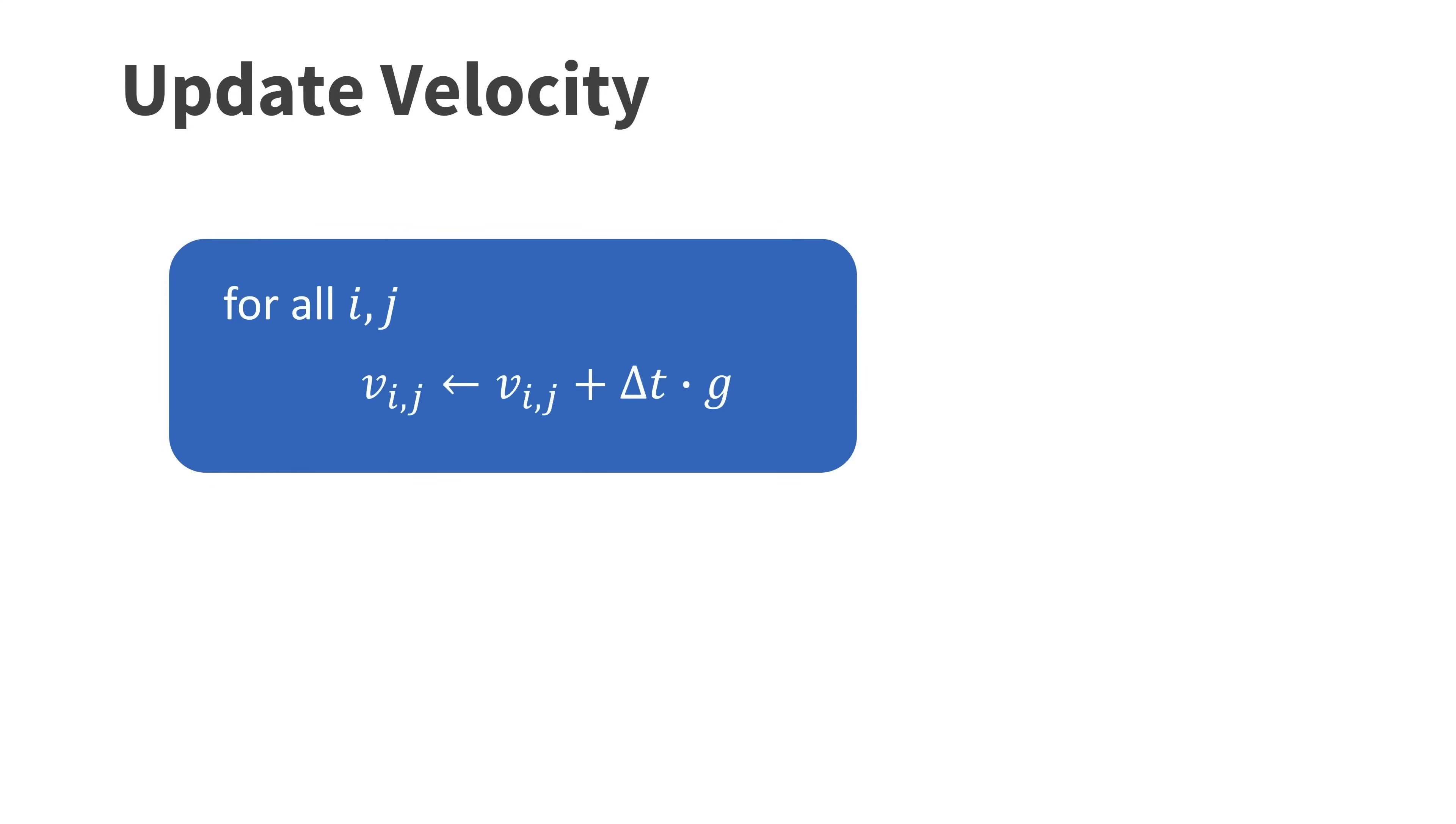The first step is very simple. Here we go through all the grid cells ij and add delta t times g to the vertical component. g is the gravitational acceleration and dt is the time step size for instance 1/30th of a second.